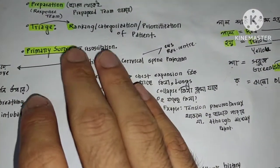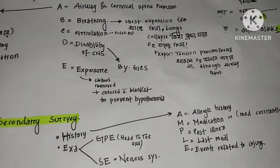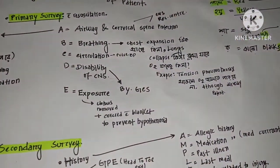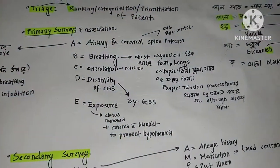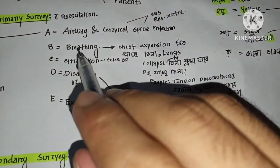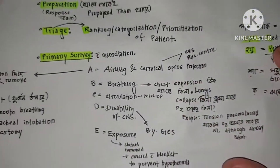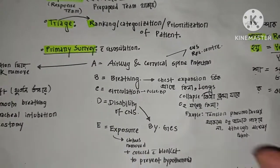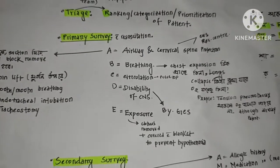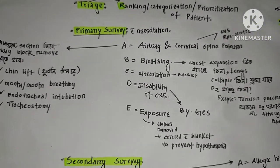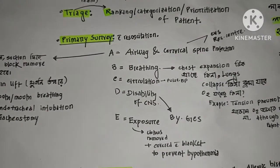The basic step after triage is the primary survey. Primary survey is performed in emergency conditions. We assess Airway, Breathing, Circulation, Disability, and Exposure — ABCDE. We start with Airway and cervical spine protection.